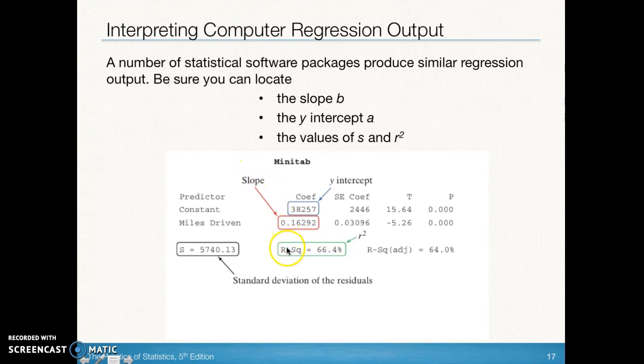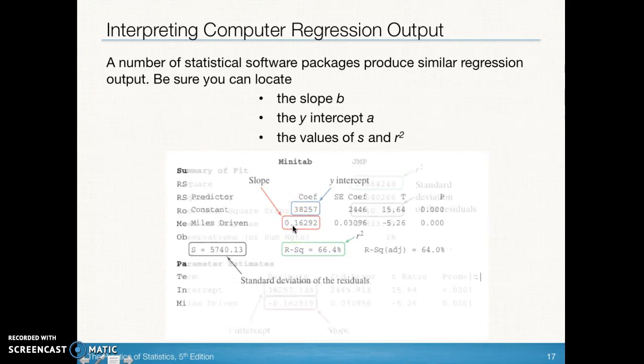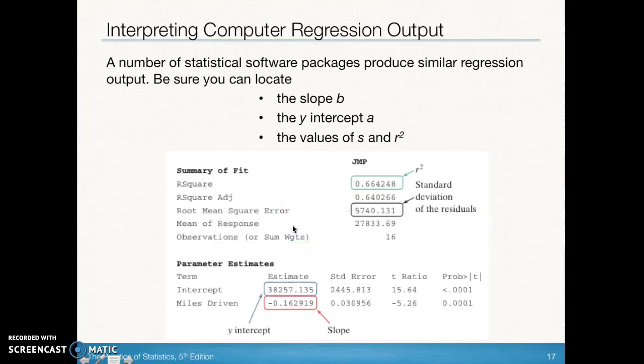The other numbers that we notice here are the s, the standard deviation of the residuals, remember we just interpreted that a minute ago, and our r squared which is our coefficient of determination. In order for us to find r we just need to take the square root of this number and use the sign positive or negative that we see for the slope. We would be able to construct our y-hat equals a plus bx line using that information.